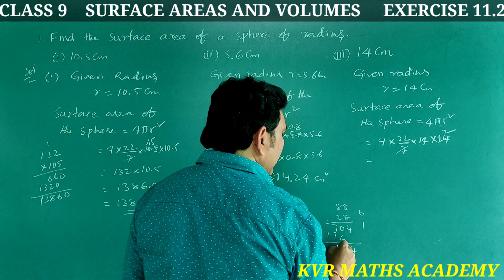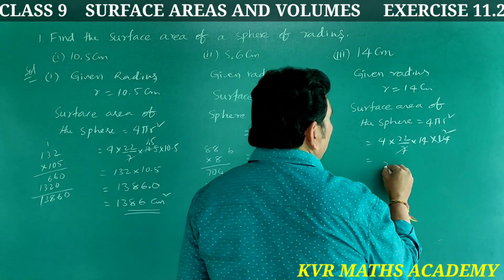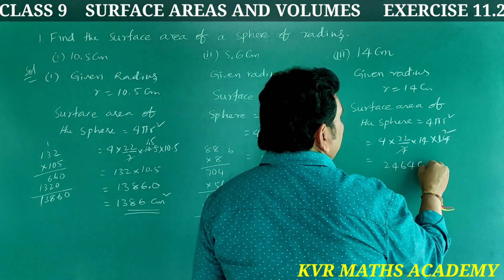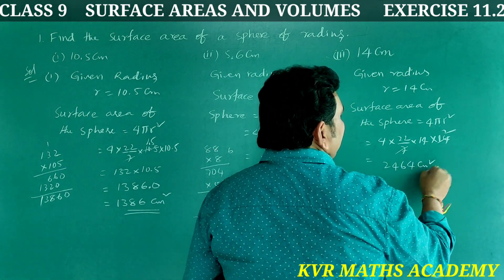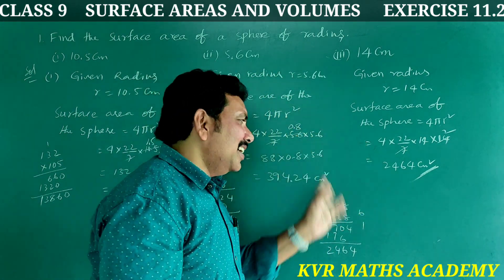Working through the multiplication: 88 × 28 = 2464. So the surface area of the sphere of radius 14 centimeters is 2464 centimeters square.